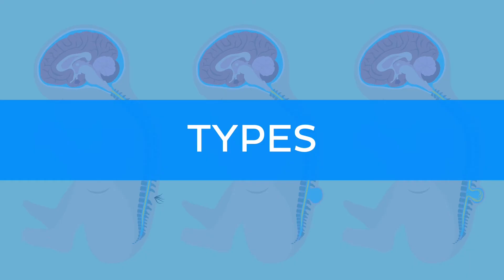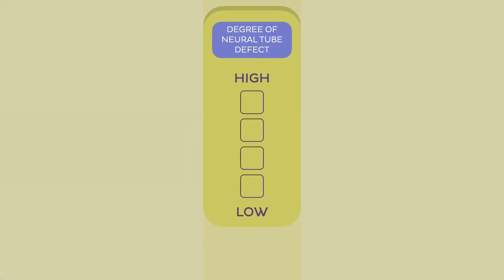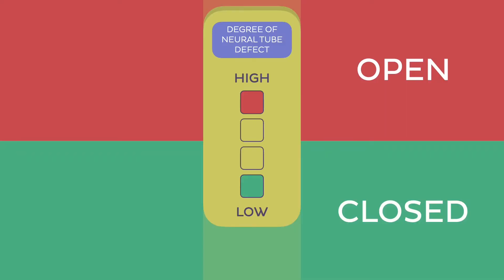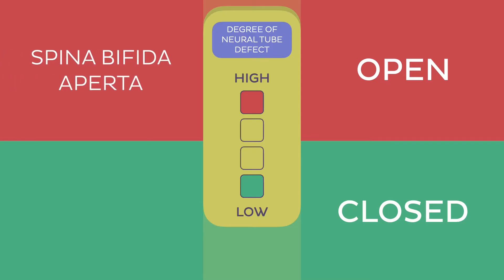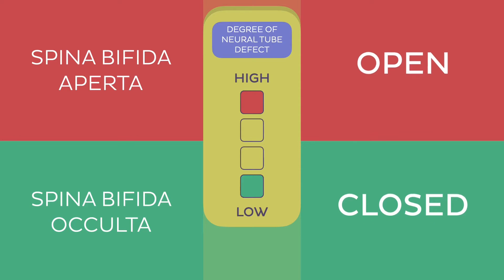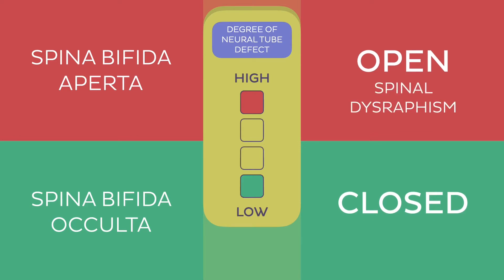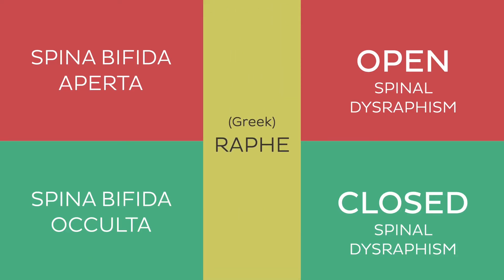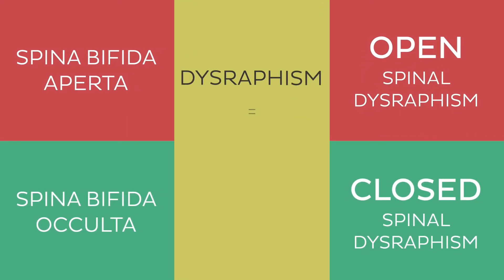Now let's talk about the types of spina bifida. Depending on the degree of neural tube defect, spina bifida can be classified as open or closed. In medical terminology, these two main types are termed as spina bifida aperta and spina bifida occulta. They can also be referred to as open spinal dysraphism or closed spinal dysraphism. The word dysraphism comes from the Greek word raphe, meaning fusion or seam in a tissue — thus dysraphism translates to incomplete closure or incomplete fusion.